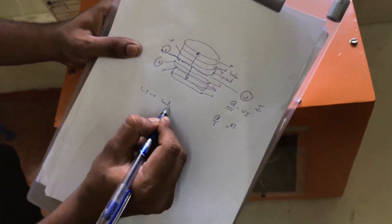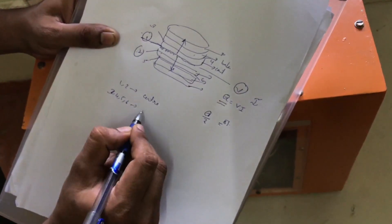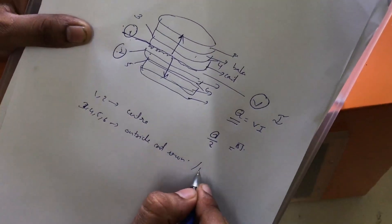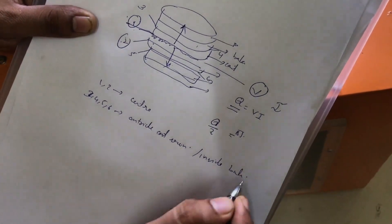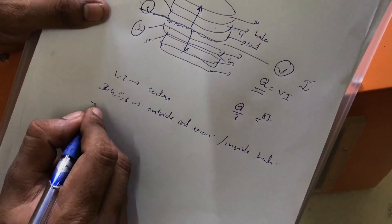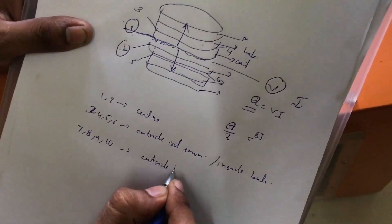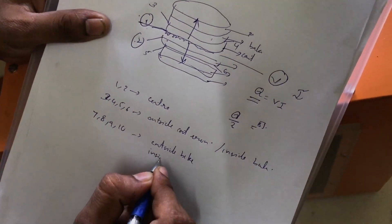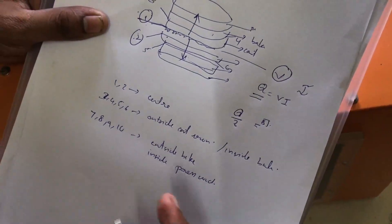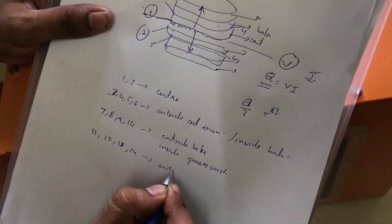T3, T4, T5, T6 are kept at the outside of cast iron, or equivalently the inside of bakelite. At the outside of bakelite, we keep T7, T8, T9, T10 — these are also at the inside of presswood. Then at the outside of presswood we keep four thermocouples: T11, T12, T13, and T14.